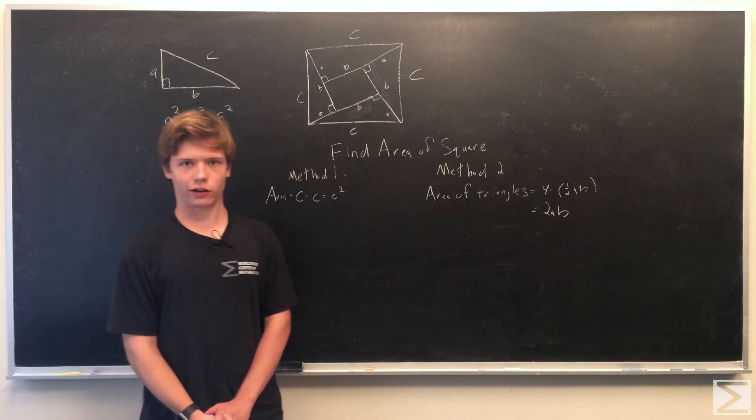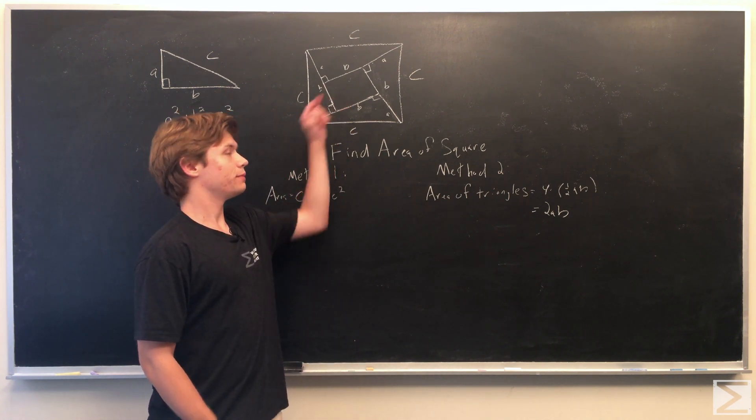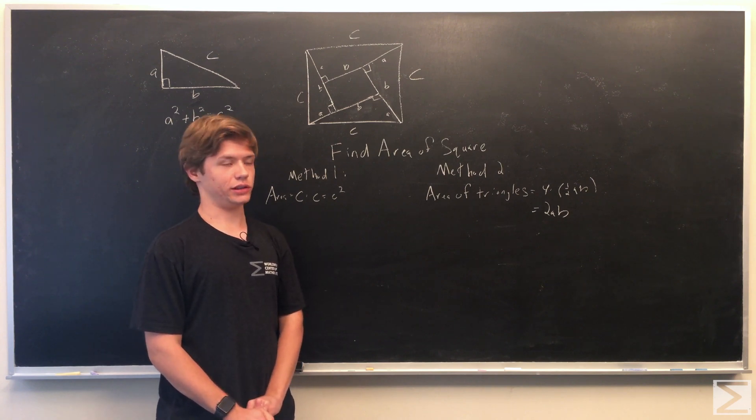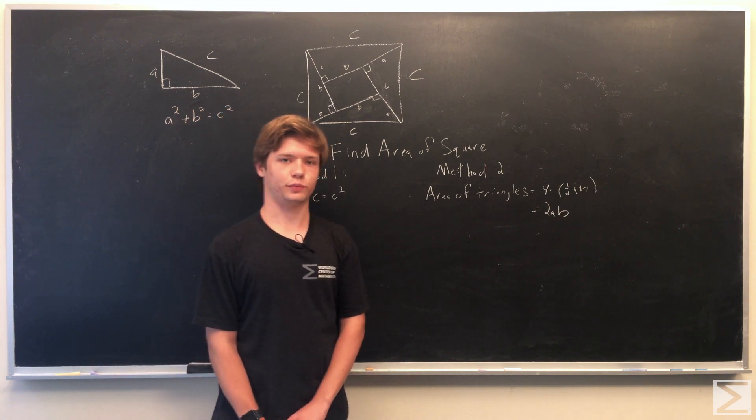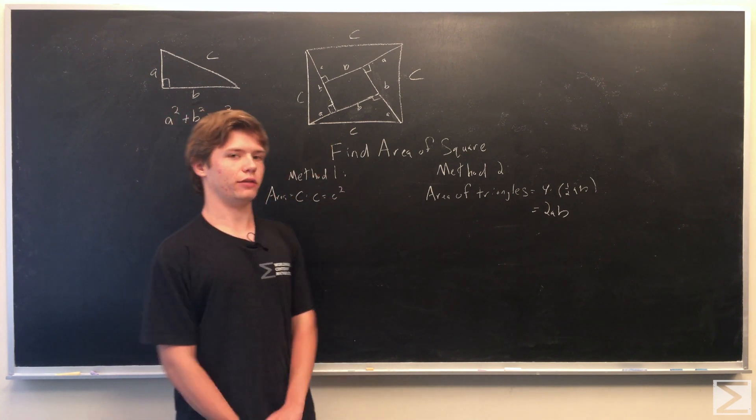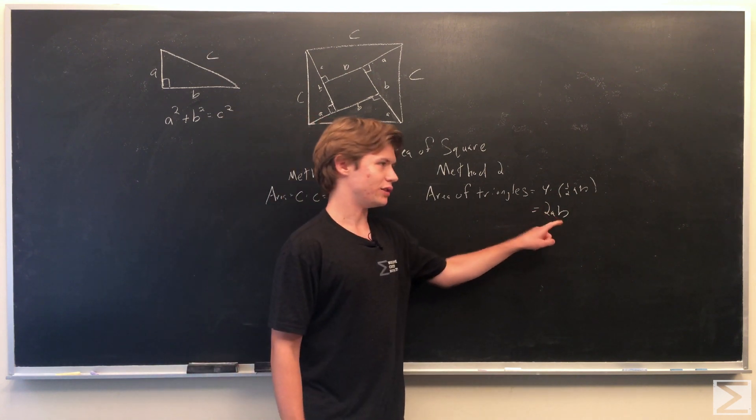So because it's a right triangle we know that the height is equal to a and base equal to b, so it's just base times height times one half, so that's one half a b. And then we account for the fact that there are four triangles so the area of all the triangles ends up equaling 2ab.